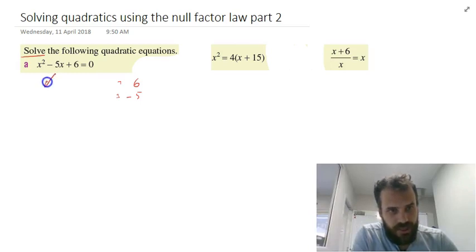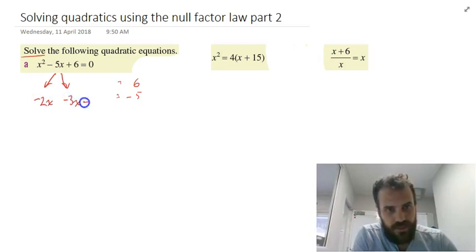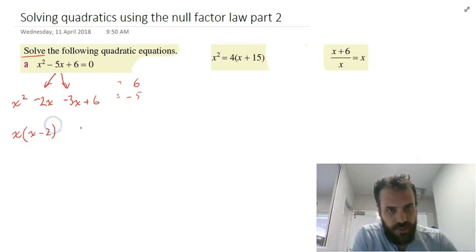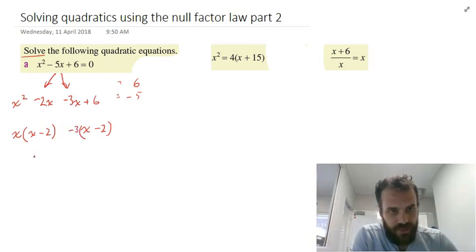So we can decompose this now: negative 2x, negative 3x, plus 6, x squared over here. Factorize this — common factor of x, giving x minus 2. Repeated factor x minus 2, and it looks like it's going to be minus 3 out here. So we get x minus 3 times x minus 2 equals 0.